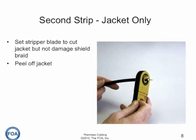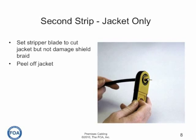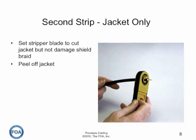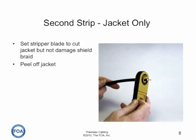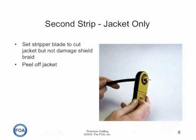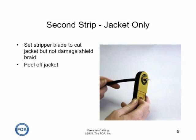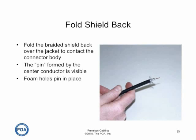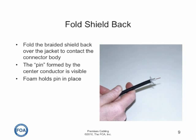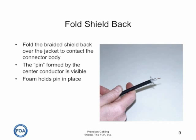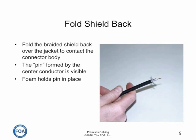The second strip is merely to remove the jacket of the cable, making sure not to damage the shield braid. Then you peel off the jacket. After removing the jacket, fold the braided shield back over the jacket to contact the connector body and become the outer conductor. Leave the foil on the foam dielectric because that helps reduce electromagnetic emissions from the connector and holds the center conductor in place.